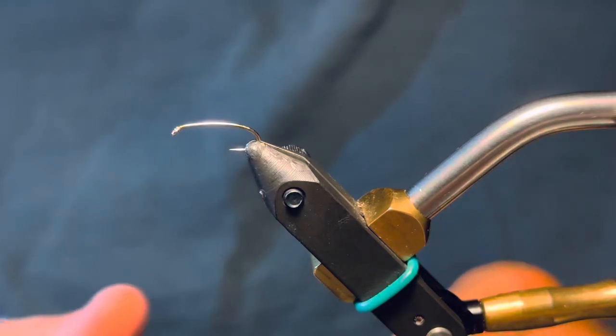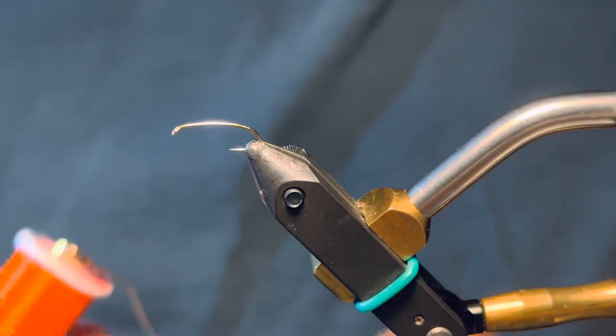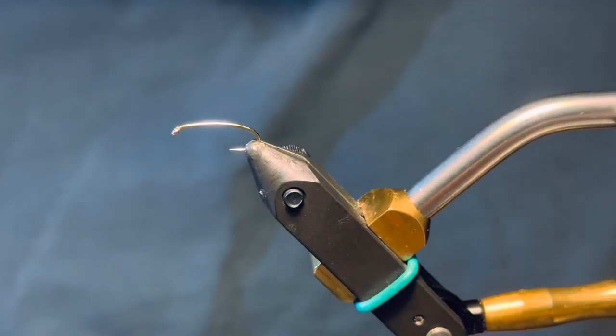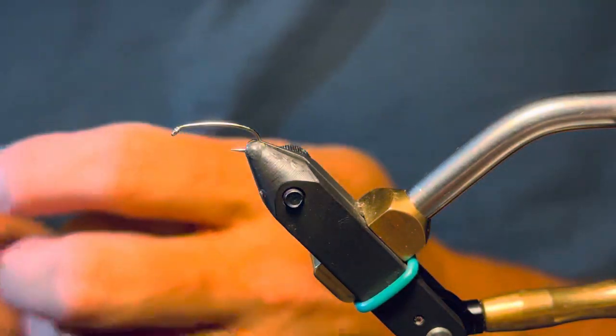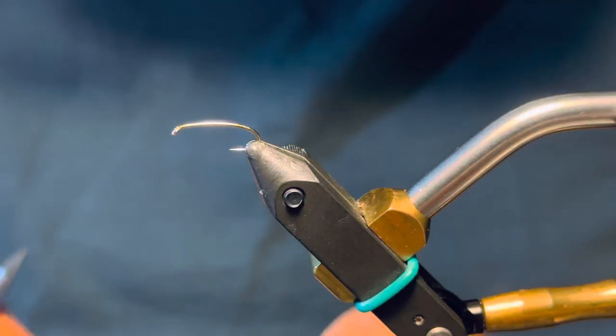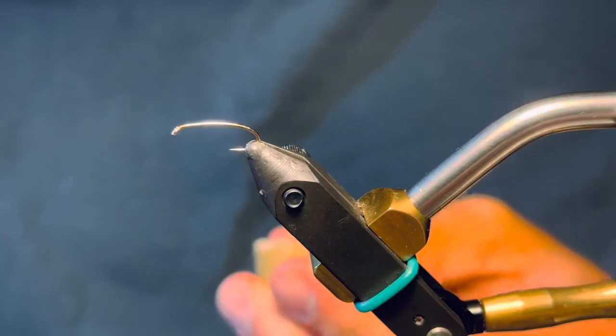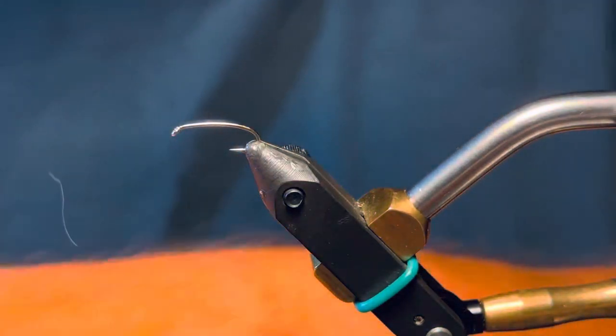The second material is thread. This is a 70 denier ultra thread. It's partridge in orange, so I'm using orange. This is fluorescent orange because I don't have a non-fluorescent orange. I'm going to wax it. I don't really count that as a material.